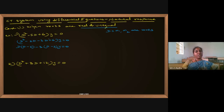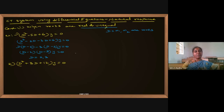We are trying to find out the roots. From (D minus 2)(D minus 3)y = 0, the D values are 2 and 3 — these are m1 and m2. The natural response is c1·e^(2t) plus c2·e^(3t).